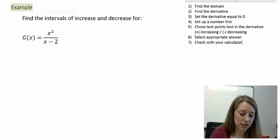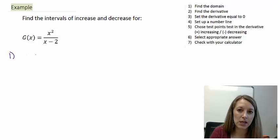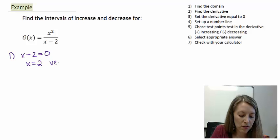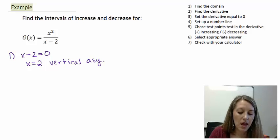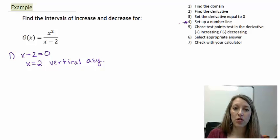The very first thing we need to do is find the domain. In this case, we have a denominator, so we need to worry about where our denominator is equivalent to 0. That gives us x equals 2. Whenever the denominator gives us 0, that tells us we have a vertical asymptote there. That's going to be important when we set up our number line, because it can affect where the graph changes from increasing to decreasing.